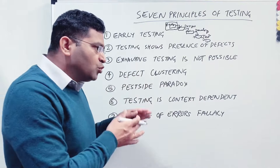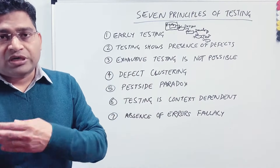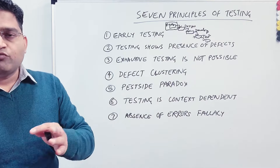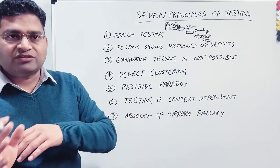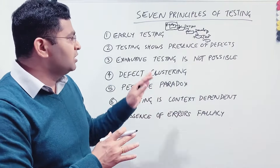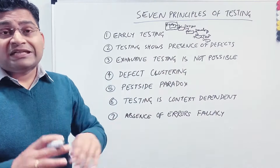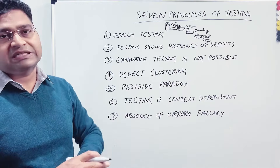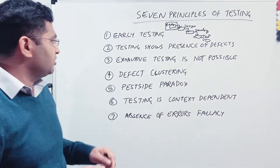A software that works in your test environment might not work in production — there may be differences in hardware or software that you can't exactly replicate in your testing environment. So testing shows presence of defects, but you can never claim that a software is 100% defect-free and will never fail. That's the second principle.